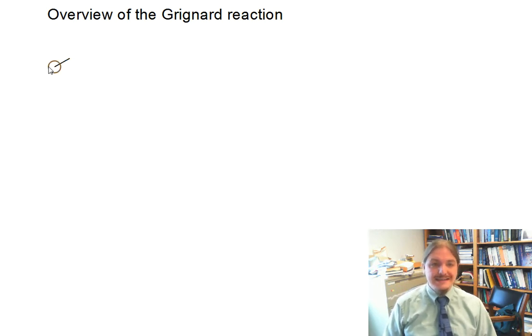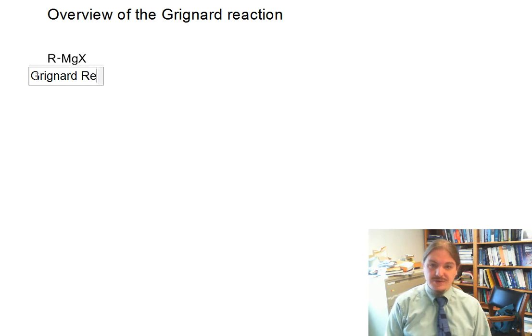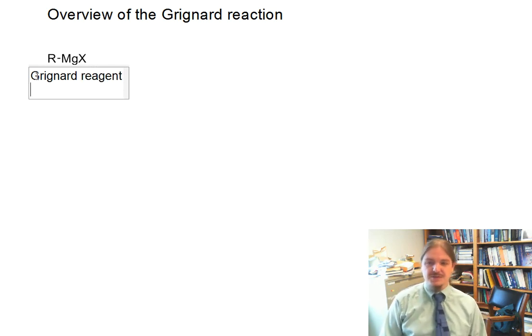The Grignard reaction is a reaction of an organomagnesium halide that has the generic form R-MgX. So this is a Grignard reagent, named after Victor Grignard, a chemist who discovered this reaction in the early 1900s and then received a Nobel Prize for the work.